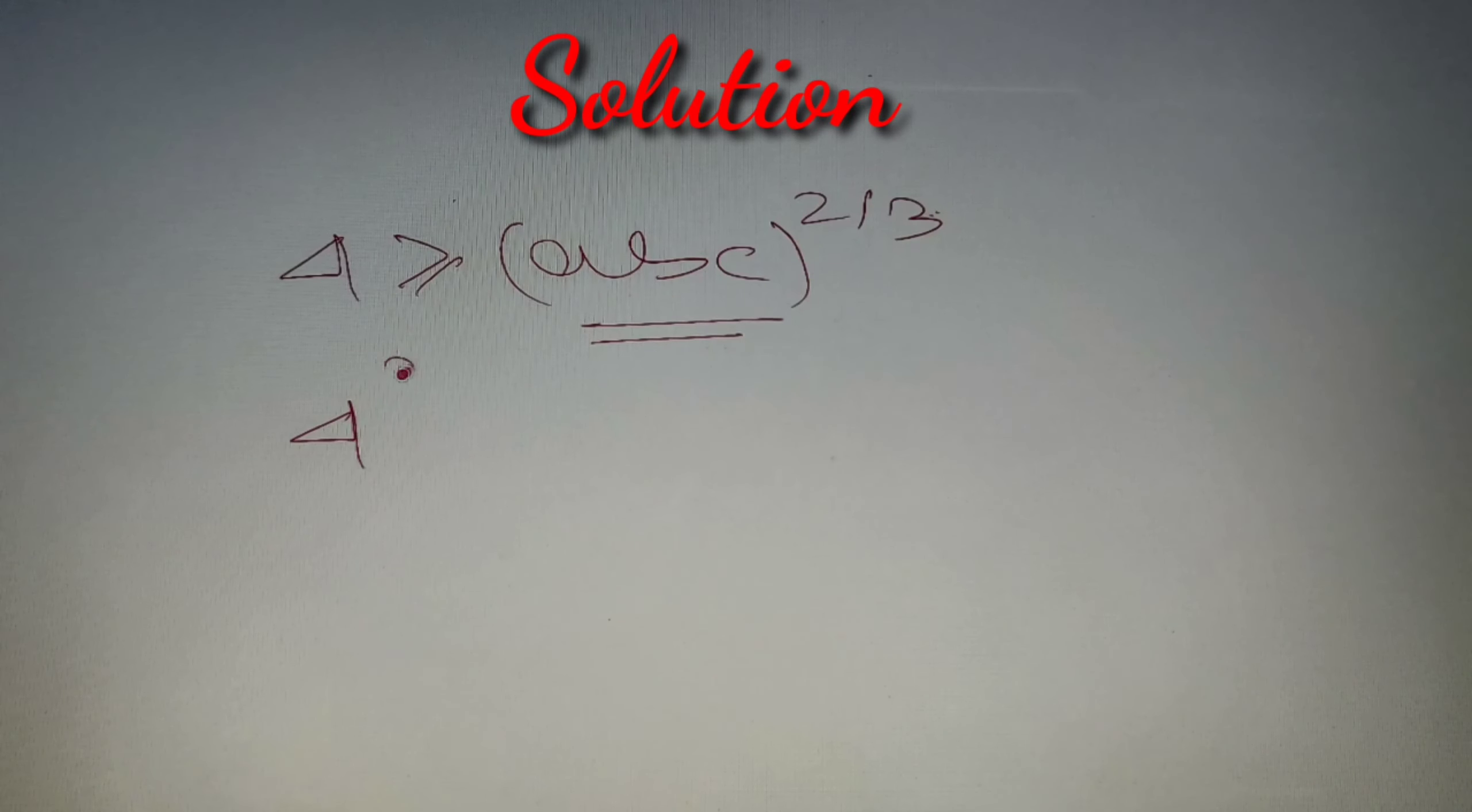So we'll get 4 raised to power 3/2 is always greater than or equal to abc, or we can say that the maximum value of abc is always less than or equal to 4 raised to power 3/2. Now instead of 4 raised to power 3/2, we can write it as 2 squared raised to power 3/2, which is greater than or equal to abc. Now 2 and 2 will get cancelled and 2 cubed is simply equal to 8.